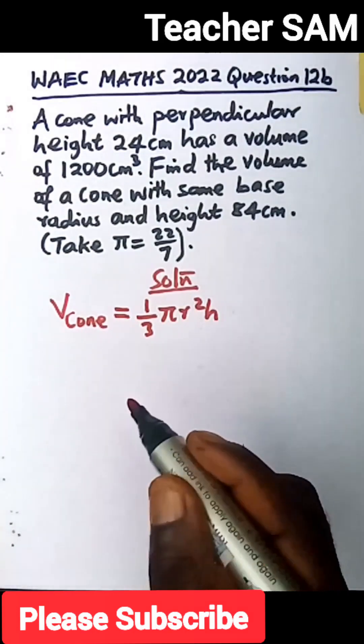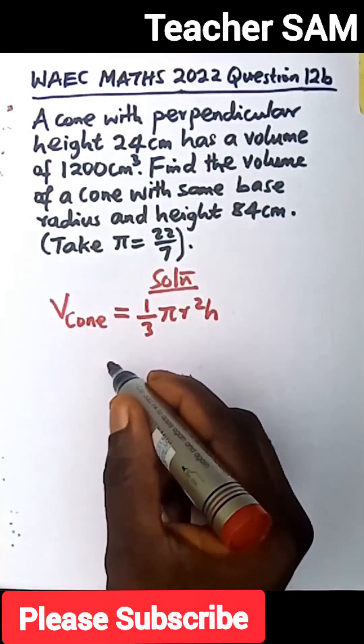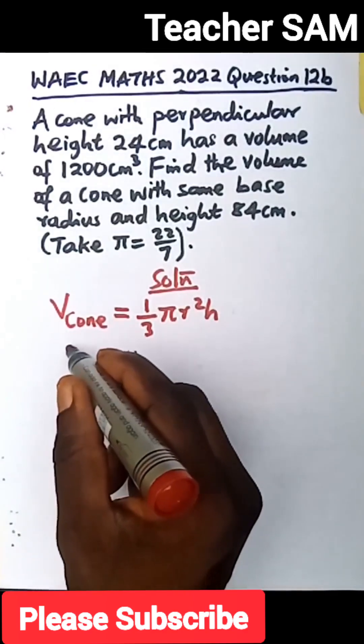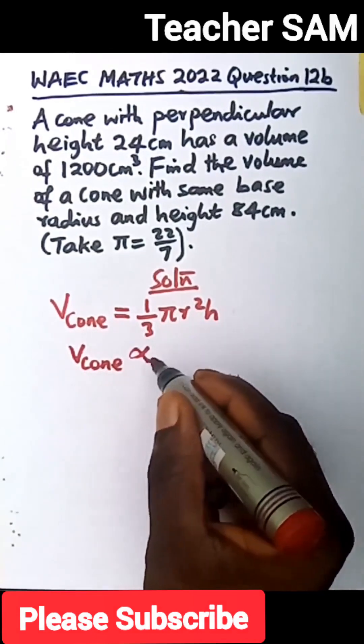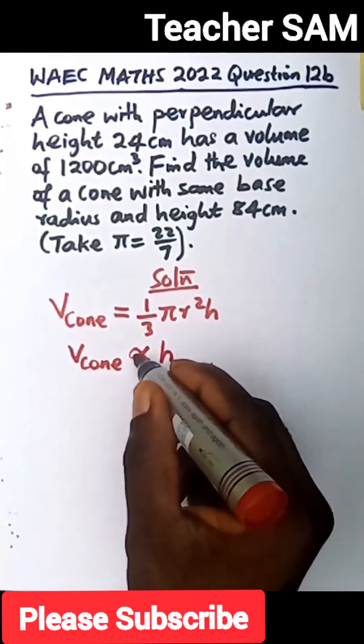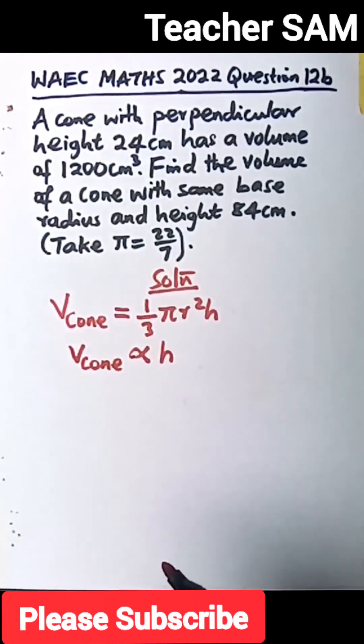From this statement, we can infer that the volume of this cone is proportional to the height. It's directly proportional to the height.